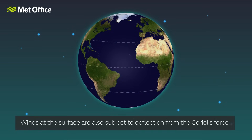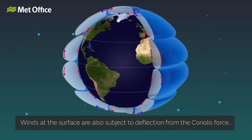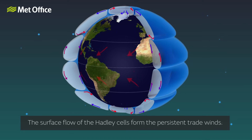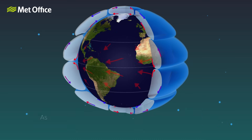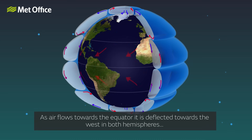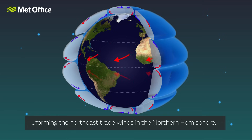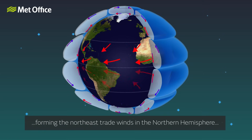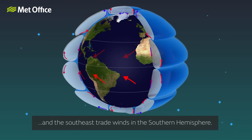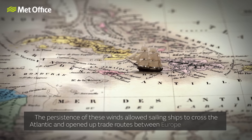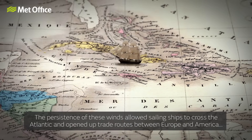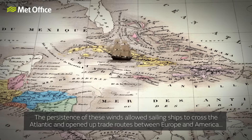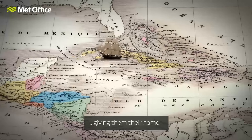Winds at the surface are also subject to deflection from the Coriolis force. The surface flow of the Hadley cells forms the persistent trade winds. As air flows towards the equator, it is deflected towards the west in both hemispheres, forming the northeast trade winds in the northern hemisphere and the southeast trade winds in the southern hemisphere. The persistence of these winds allowed sailing ships to cross the Atlantic and opened up trade routes between Europe and America, giving them their name.